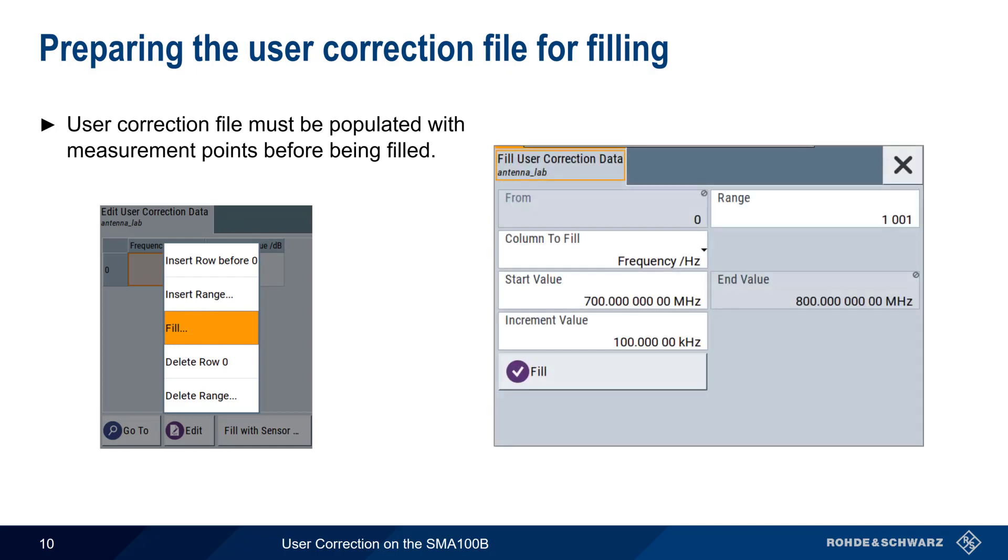Using the Fill function, we enter a start frequency, here 700 MHz, an increment step, here 100 kHz, and the number of steps or range, 1001 in this case. Note that the end value is automatically calculated based on these values. We then click on Fill and exit this dialog.